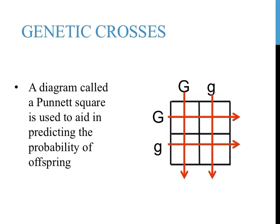In the diagram on this slide, you can see the capital G and lowercase g on top of the Punnett square should be placed in both of the boxes found below these letters. The same is true for the capital G and the lowercase g on the left side of the Punnett square.